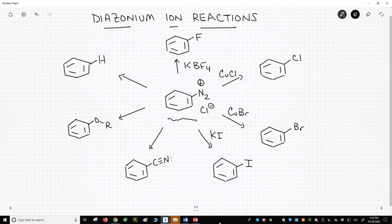The next reaction uses copper cyanide with the diazonium ion to place a cyano group on the ring. That's kind of cool.